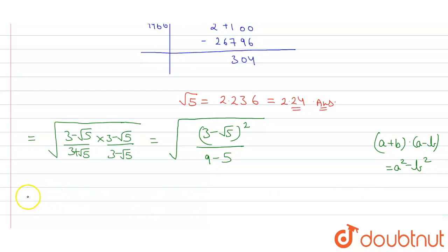So square root of 3 minus root 5 the whole square upon 9 minus 5 is 4. Now we can write this as square root of 3 minus root 5 the whole square upon square root of 4. Now square root 2 cancel. So left with 3 minus root 5 upon square root of 4 is 2.